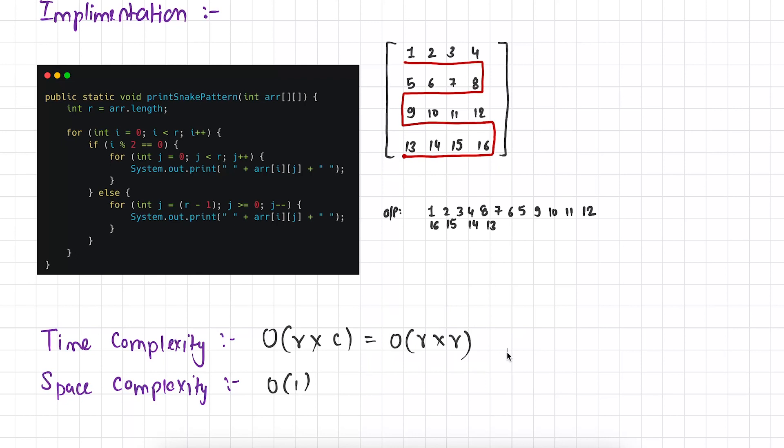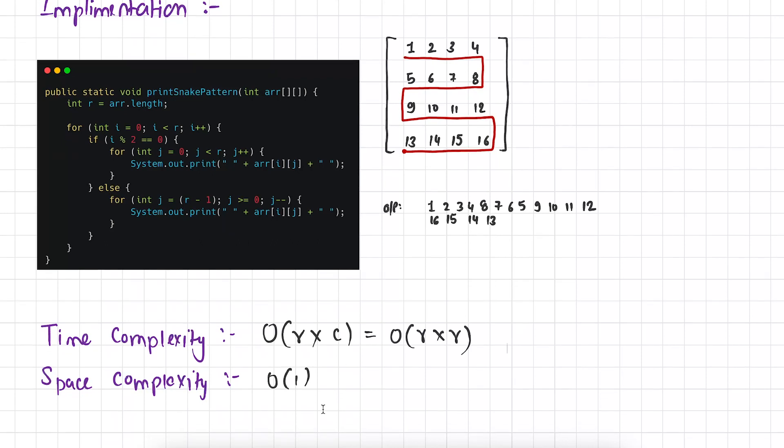Now talking about the space complexity, you can see that we are not using any extra space here except few variables that is i and j. So we can say it confidently that the space complexity of this function is big O of 1 or constant space. So our algorithm to print elements of matrix in snake pattern took big O of r into r time and big O of 1 constant space to solve this problem.